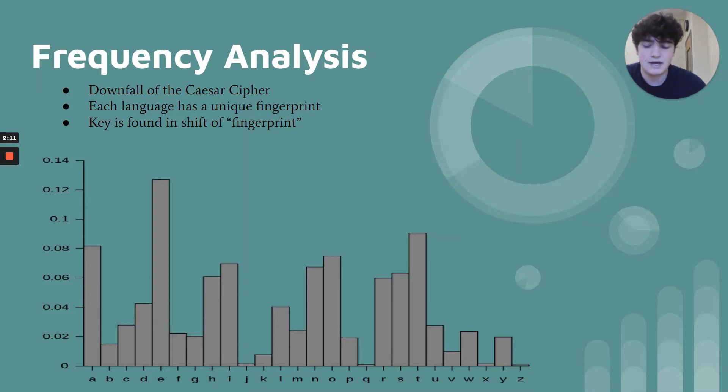This characteristic can be thought of as the fingerprint of the English language. Al-Kindi recognized that if we count the number of times each letter occurs in our cipher text, which is our scrambled message, we simply need to count the number of times the most frequently occurring letter has been shifted down the alphabet. In other words, how many letters our fingerprint has shifted down the alphabet, and we have our deciphering key.